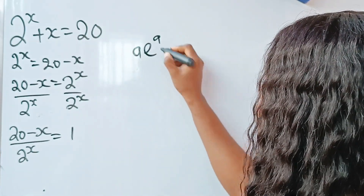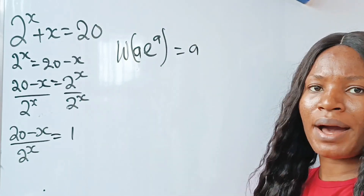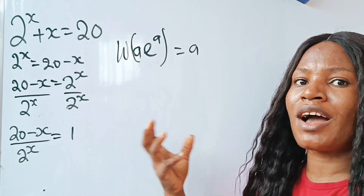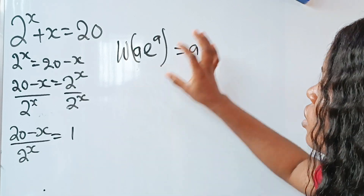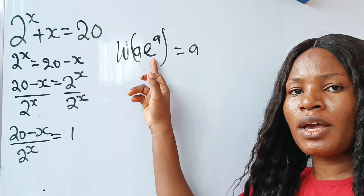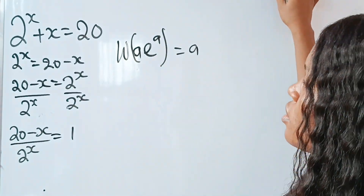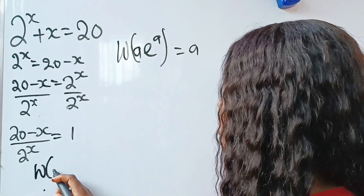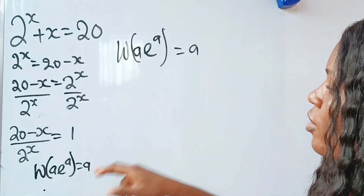What is the Lambert W function all about? It says that when you have, for example, a · e to the power of a, applying this function gives you back a. So when you have something in this form, you can actually solve it using algebra. If you manipulate your expression into the form a · e^a, you will get a back — that is, what multiplies e must be the same as what e is raised to as a power.